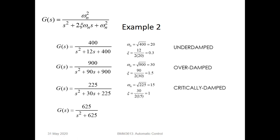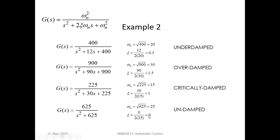Lastly, when G(s) equals 625 divided by s-squared plus 625, the natural frequency is 25 and the damping ratio is 0. The system is undamped because the damping ratio equals 0.